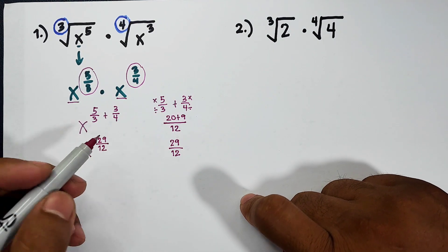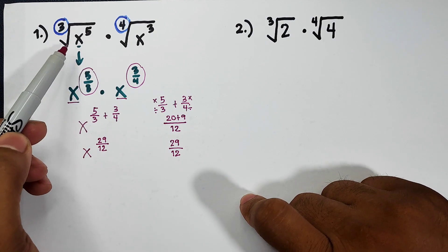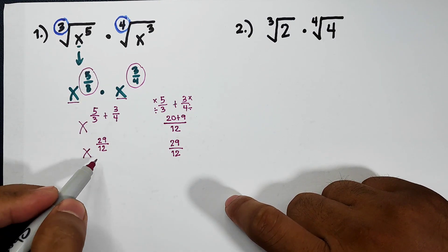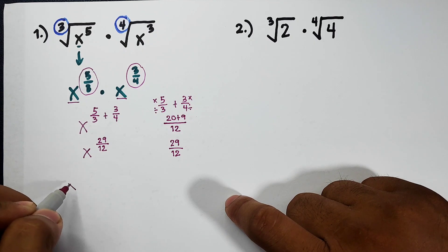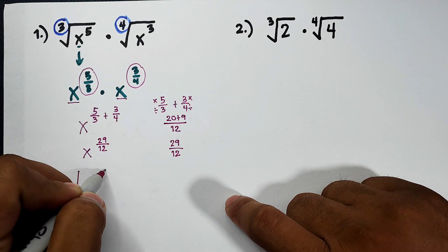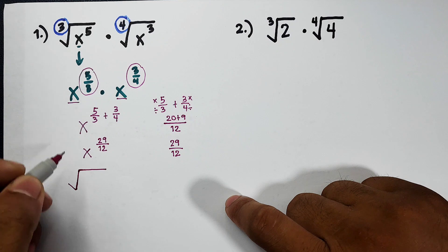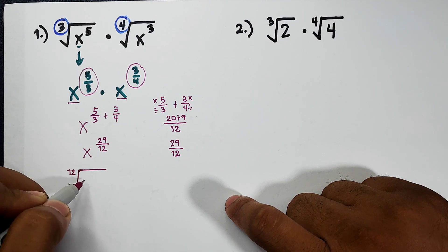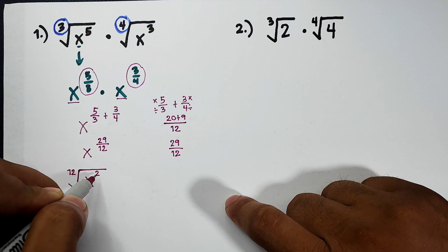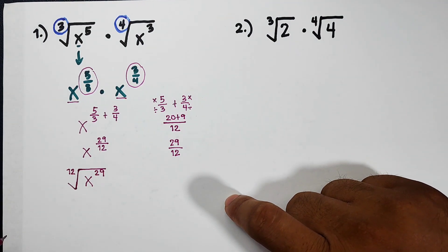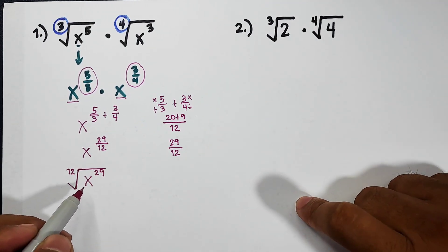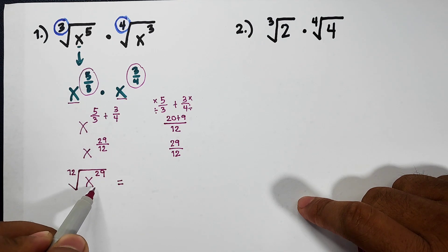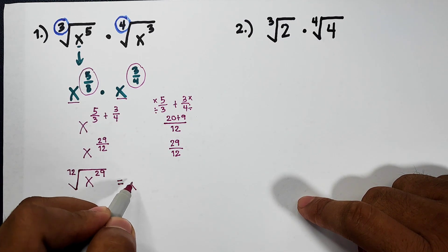So what will happen here? Since it came from the radicals, we will convert it back to radical form. It will become this — draw a radical sign. The denominator is 12, so this is the 12th root of x raised to 29. In this case, we can simplify this. This is not a perfect 12th root, but it can be simplified.